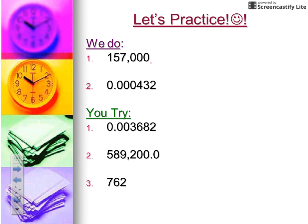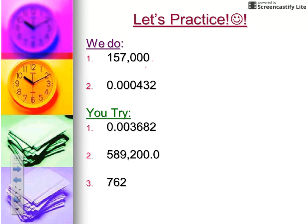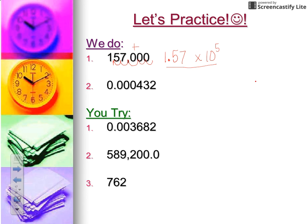Here we have 157,000 — this is one of those great big numbers, so right away I know the sign of my exponent is going to be positive. The decimal is understood to be at the end, and when I move my decimal I'm moving it one, two, three, four, five places. My coefficient is 1.57 — notice this is greater than one but less than 10. We moved the decimal five places, so the exponent is 5, and the sign is positive because this was a big number. The answer is 1.57 × 10⁵.